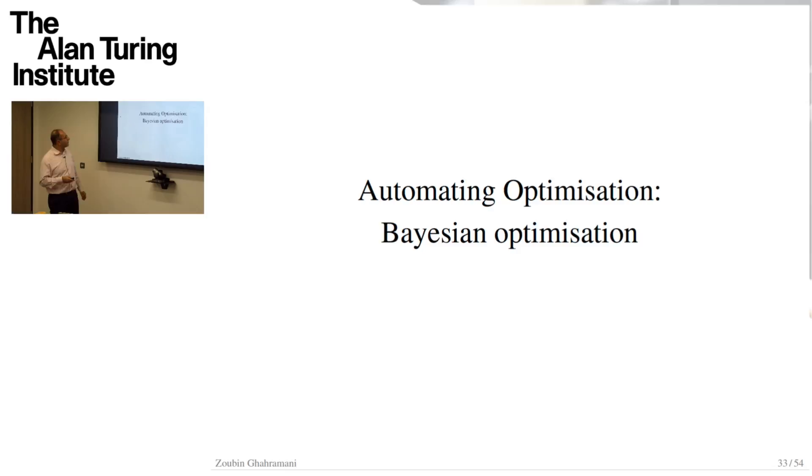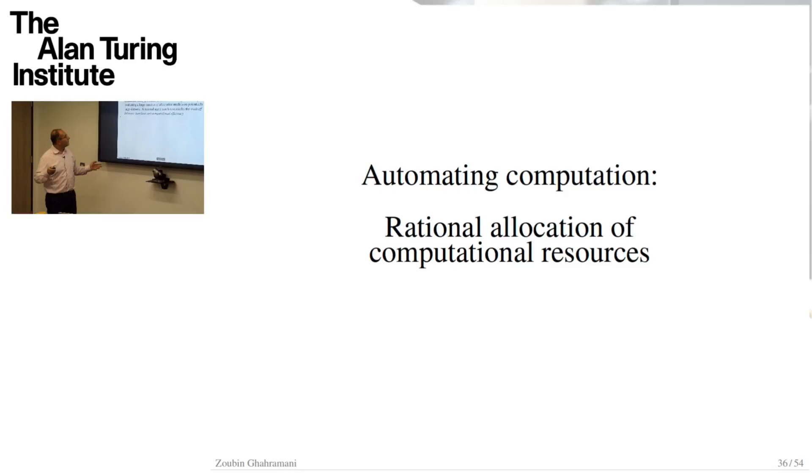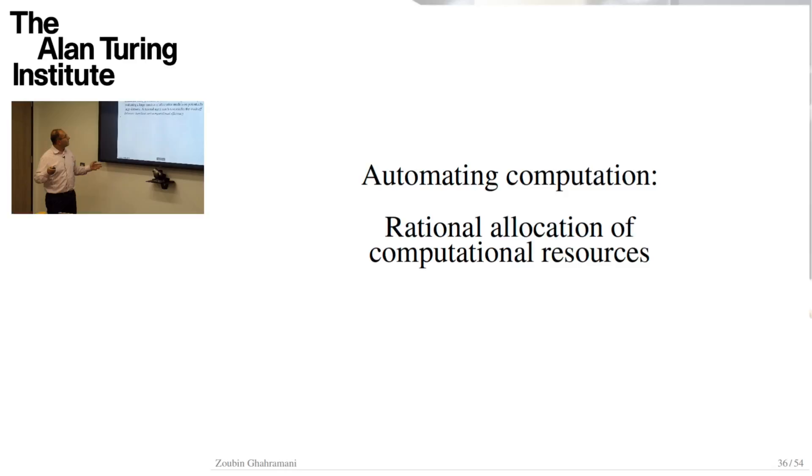So Bayesian optimization, I'll time out. I'll say it's great, I can tell you more about it later. And then I'll conclude by saying that this framework offers a way to reason about uncertainty and learn from data. And the thing that drives me these days is this idea that we can use this framework to automate many aspects of machine learning. I talked about a few of them here, and I have a review article from last year that kind of lays out this sort of big picture for probabilistic machine learning. And I have lots of collaborators I should thank before finishing.